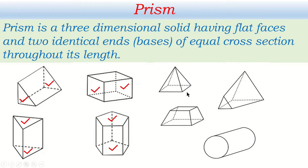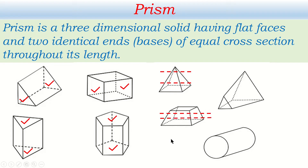There are some objects which are not prisms. For example, if two ends are not identical — one rectangular and one pointed — it is not a prism, as the cross-section area is not equal throughout its length. Similarly, objects whose two bases don't have equal area, or whose cross-sections are unequal when cut through the length, are not prisms. An object without flat faces is also not a prism.